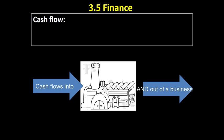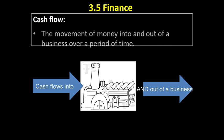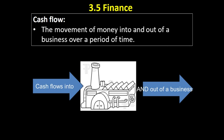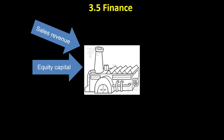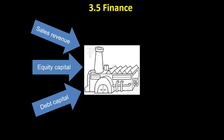Cash flow is the movement of money into and out of a business over time. Much like you might have pocket money or earn money from a part-time job — you have cash coming in and you spend some as well. In order to spend money, you need to have money coming in. Cash can come into a business from sales revenue, equity capital such as shareholders investing or owners putting in personal savings, or through debt financing.